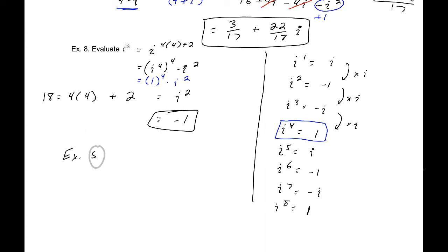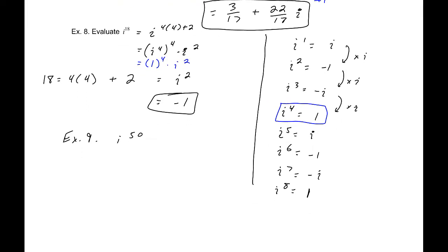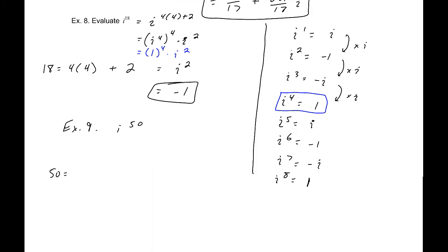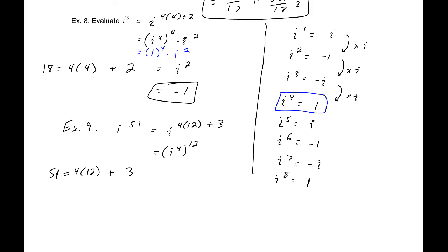Let's also evaluate i to the 51st power. Four goes into 51 twelve times with a remainder of 3, so we write i to the (4×12 + 3). That equals (i to the 4th) to the 12th times i cubed. i to the fourth is 1, so this is 1 to the 12th times i cubed, which is just i cubed — and from our chart, i cubed equals negative i.